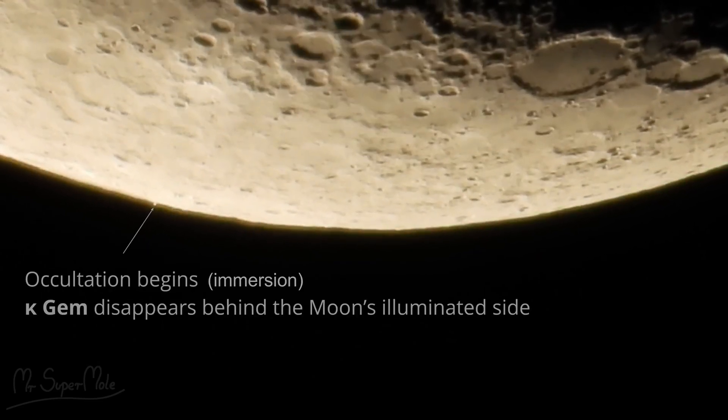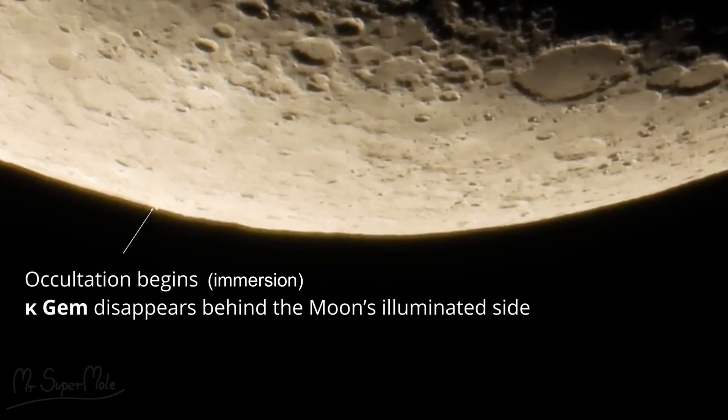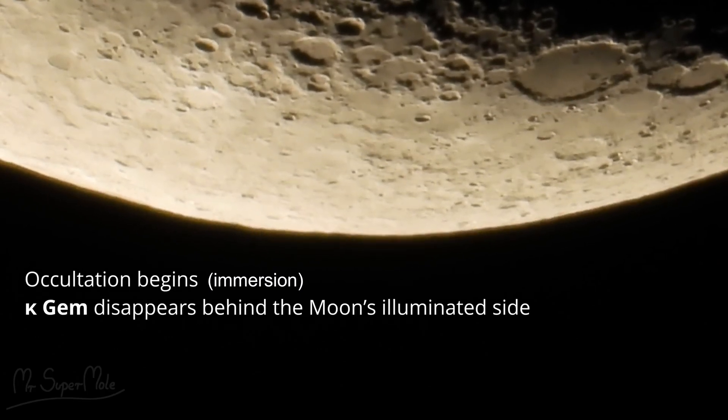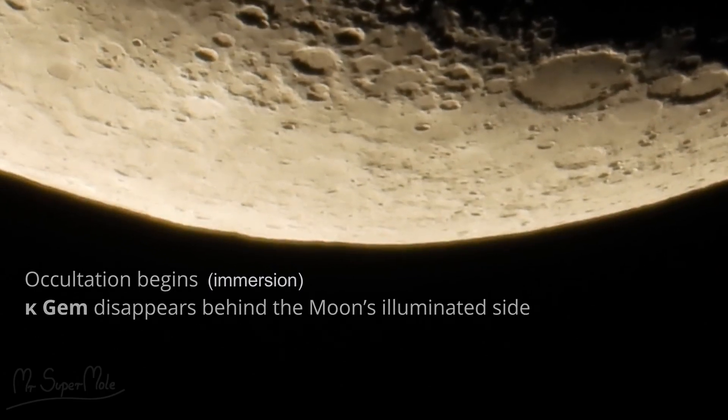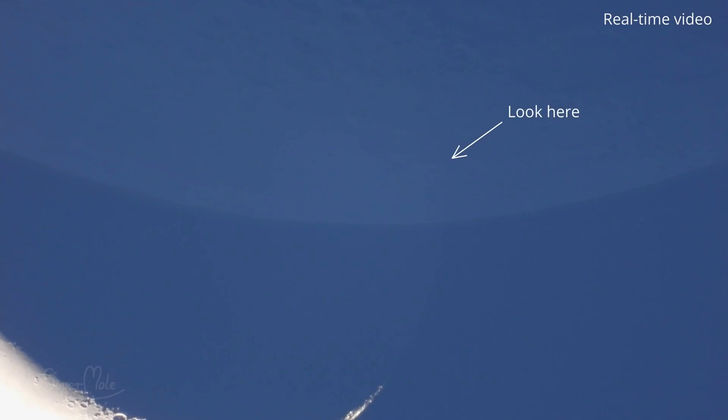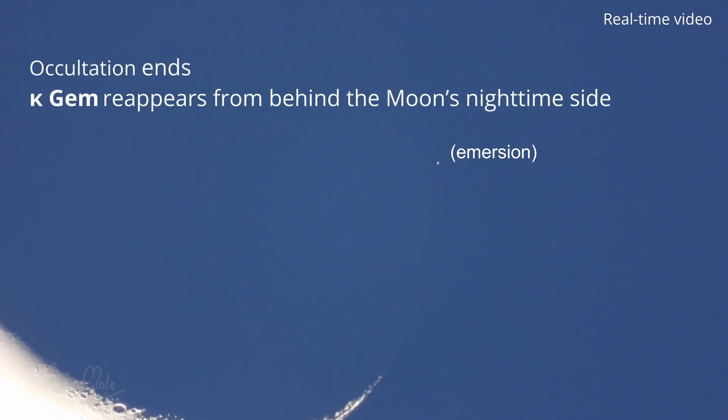Here's a short clip illustrating how it works with a visible star. The disappearance of a light source behind the Moon is called Immersion. And its subsequent reappearance on the other side is called Immersion.